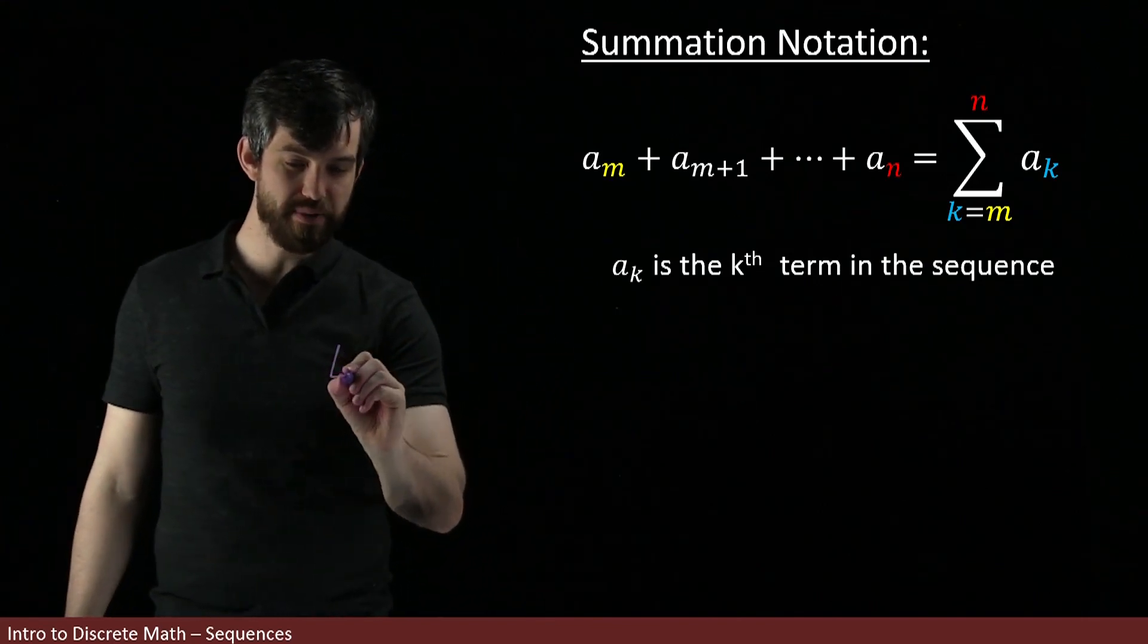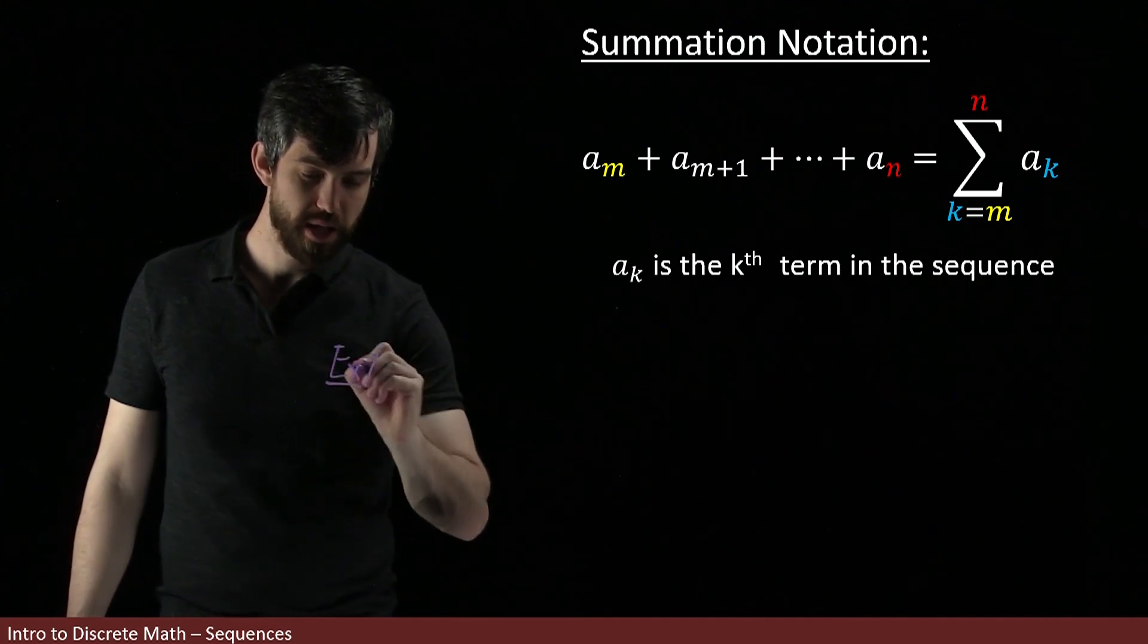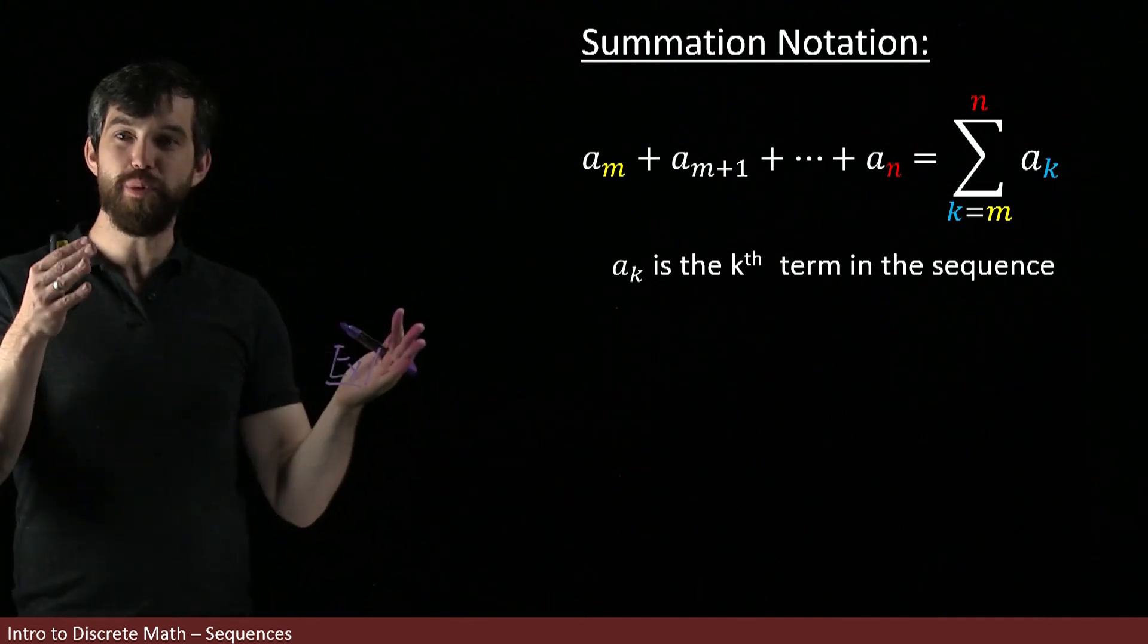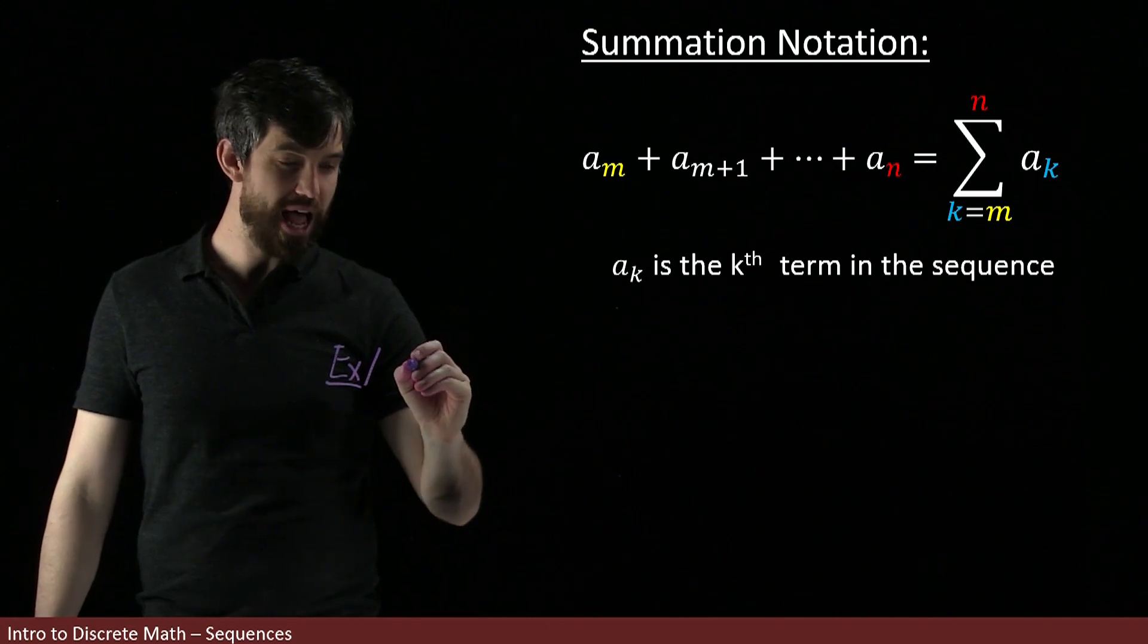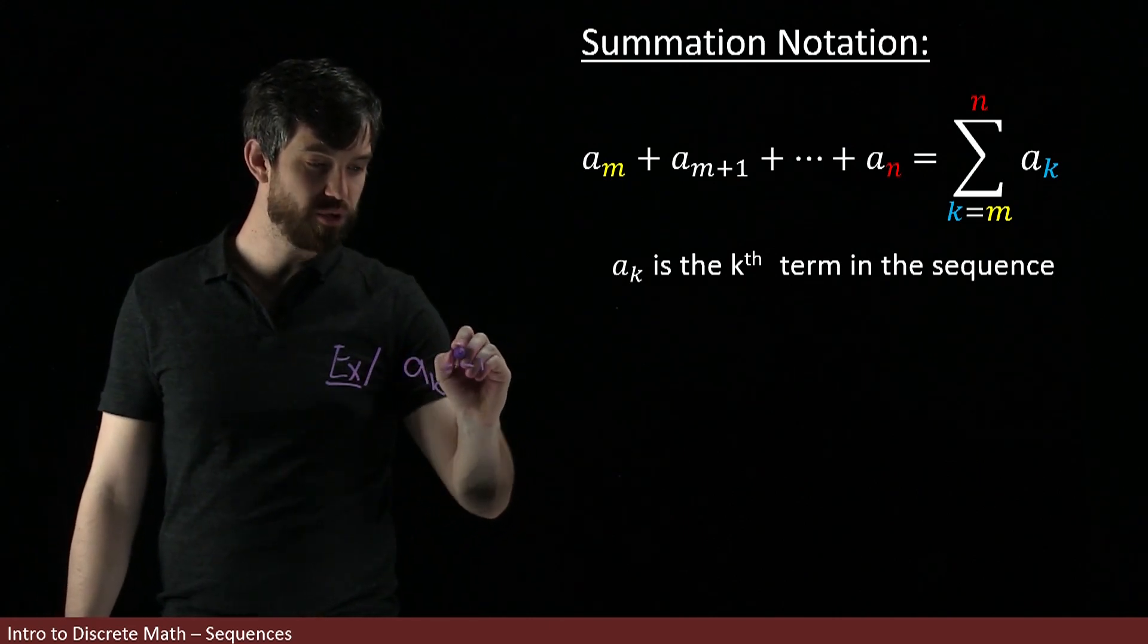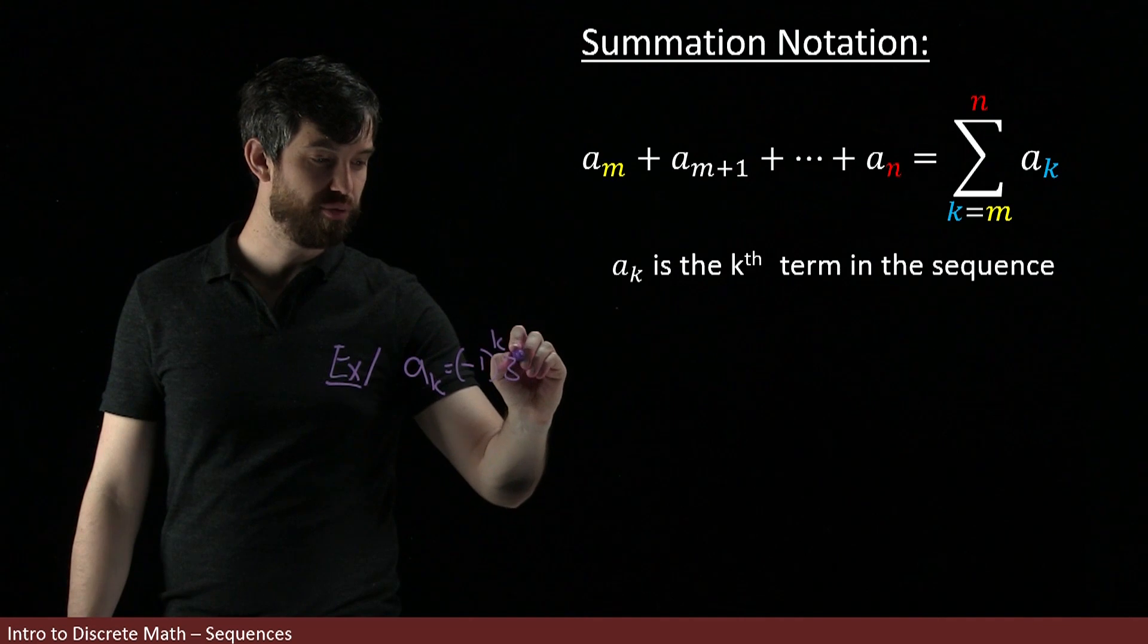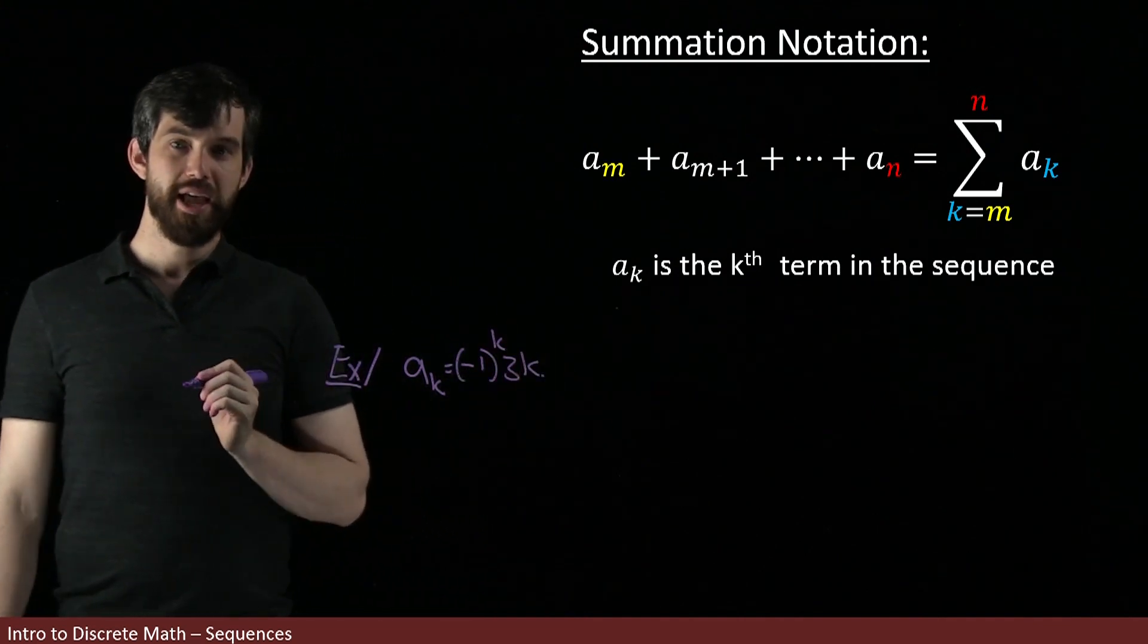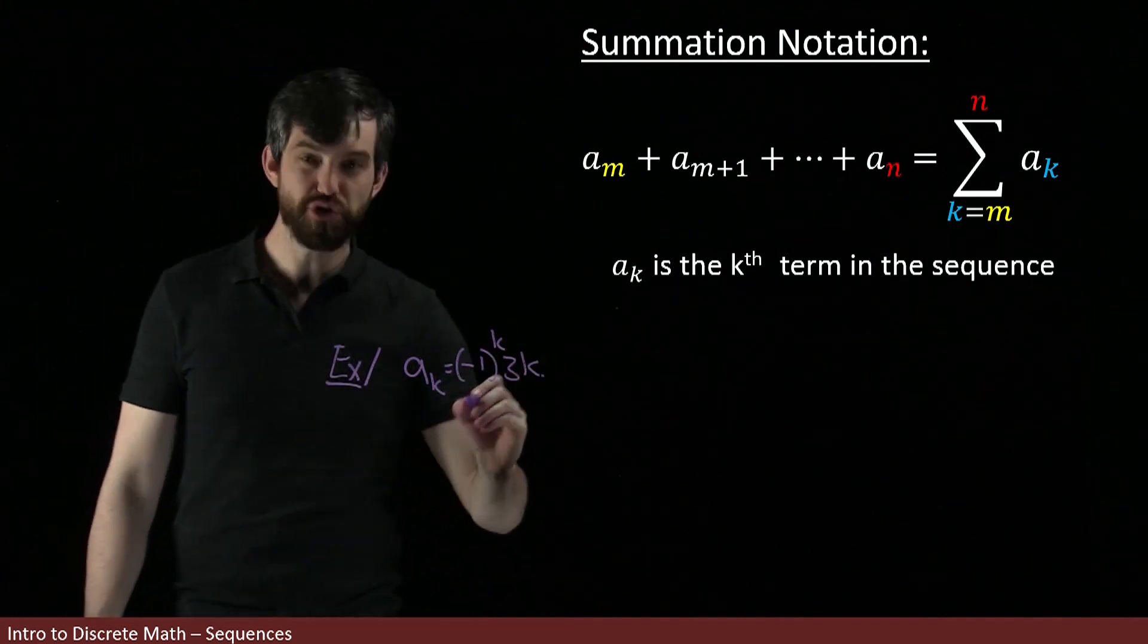Okay, so, let's see how we might run this out in an example. I want to keep with our familiar example of ak being the minus 1 to the k, 3k.